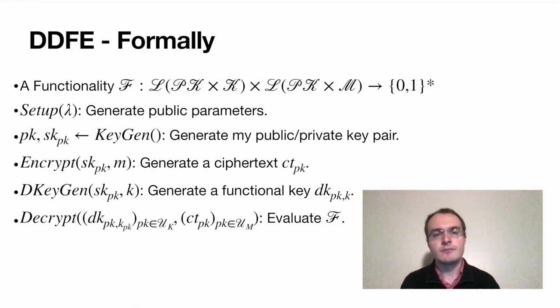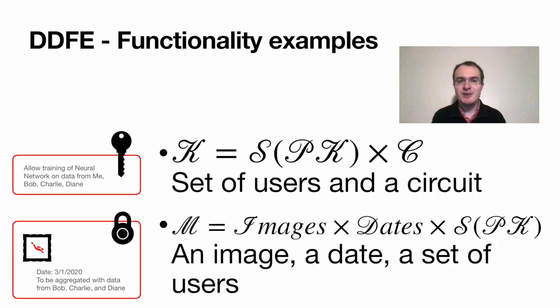Now, for the flow of things, you would start with a setup which generates some shared parameters. Maybe everyone agrees on a hash function, on elliptic curve parameters, and so on. You do this once, and then everyone can generate their public-private key pair. They advertise the public key, that's their identity for all intents and purposes here. And they keep the secret key to themselves. They'll use it for encrypting and generating functional keys. Finally, anyone can decrypt once they have enough ciphertexts and enough functional keys. That's maybe a bit terse. Let's see how we can connect those concepts to the example we saw earlier.